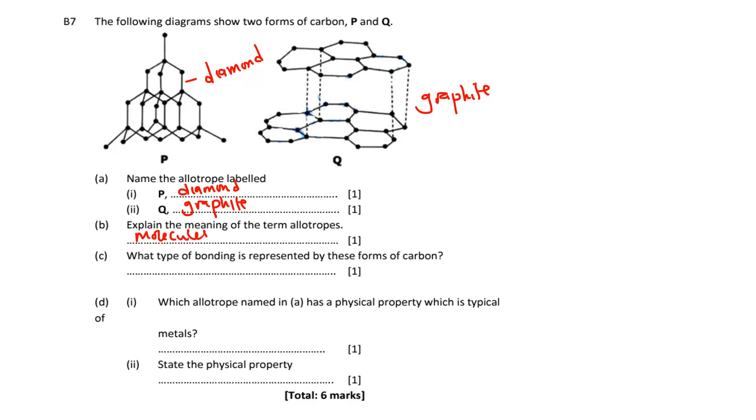I've already defined allotropes at some point, but anyway we can say molecules that consist of atoms of one element but different structure and geometric shape. So what we call allotropes, for example diamond and graphite.